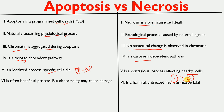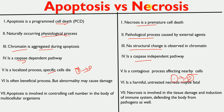Apoptosis is often a beneficial process, though abnormalities may cause damage. Necrosis is harmful, and untreated necrosis may be fatal. Apoptosis is involved in controlling the number of cells in the body of multicellular organisms, whereas necrosis is involved in tissue damage and induction of the immune system.